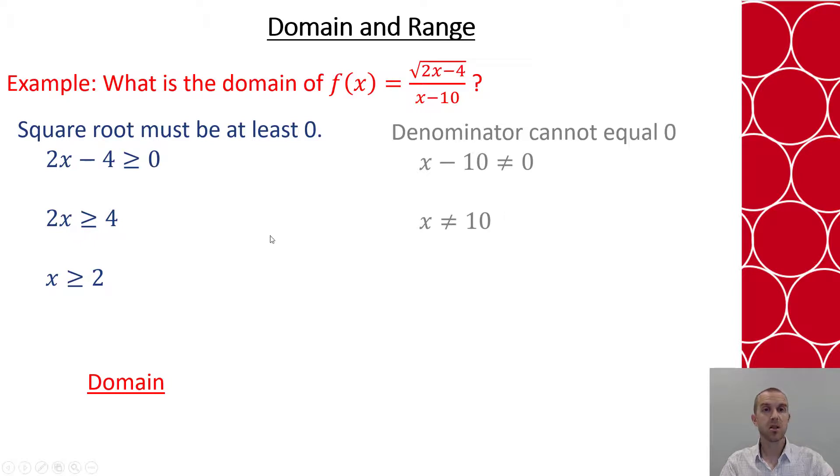So how do I write that in interval notation? Let's start, the lowest number we can go to is 2. And it equals to, so I can put a bracket. Now say, okay, if I think about greater than or equal to means it goes on to infinity. But I hit a snag. That snag is 10. So I'm going to put 10 here with the parentheses because I cannot equal.